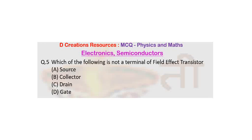Now the choices are A. Source, B. Collector, C. Drain and D. Gate. I will give you 10 seconds to think about it and then give the answer.